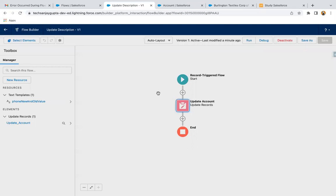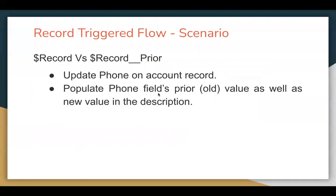I hope you understood the difference between $Record versus $Record__Prior. Always remember, they will be available in case of update only, because in case of create and delete you have only one state — you don't change the values of that record. So these will be available in case of update.